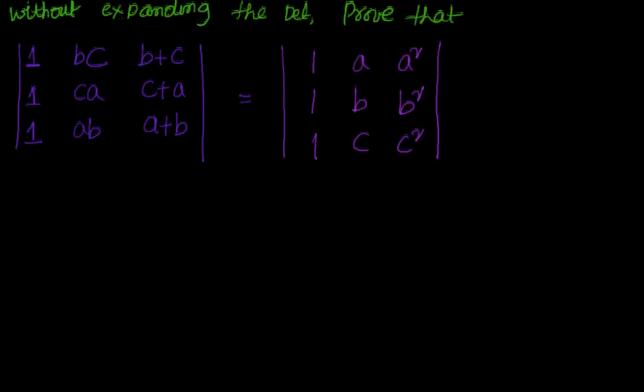Now seems to be a little bit tough one. Let's think about this. We have 1,1,1, BC, CA, AB, B+C, C+A, A+B and we have 1,1,1, ABC, A², B², C².